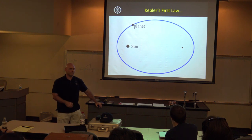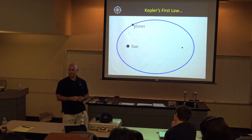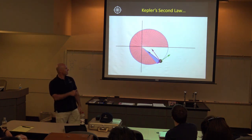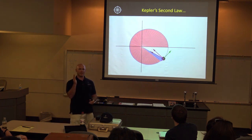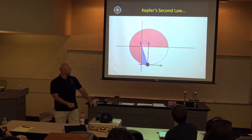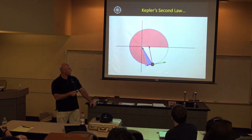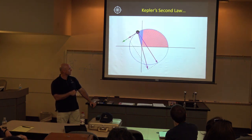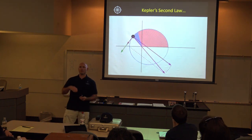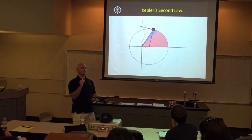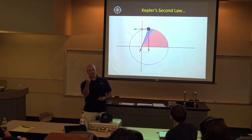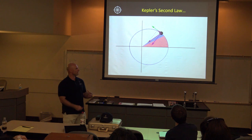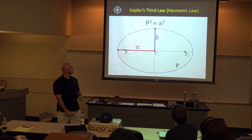The three laws of planetary motion: Law one — the path a planet takes orbiting the sun is an ellipse with the sun at one focus. Law two — the equal areas law: a line drawn from the planet to the sun sweeps out equal areas in equal periods of time, meaning the planet moves slower when further from the sun and faster when closer. This explains why the winter season is shorter than summer: during winter the earth is slightly closer to the sun and orbits faster, while in summer it's farther away and orbits slower.